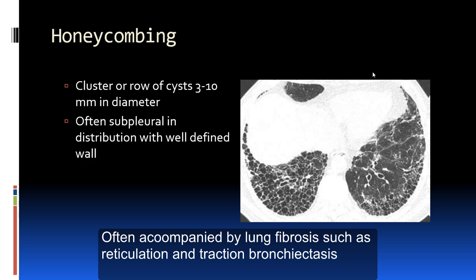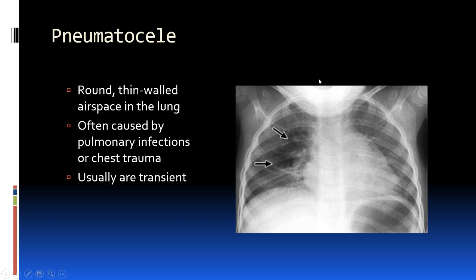Honeycombing refers to clusters of cysts usually between 3 to 10 millimeters, though they can be up to 20 millimeters in diameter. It is often subpleural in distribution with well-defined walls, though the wall is typically thinner — less than 4 millimeters.